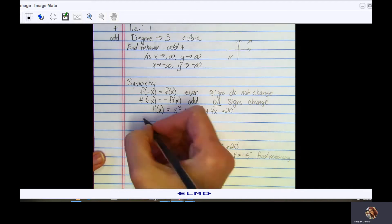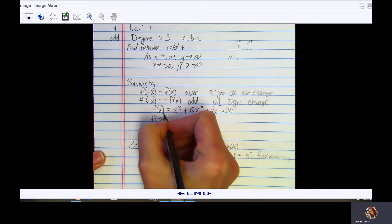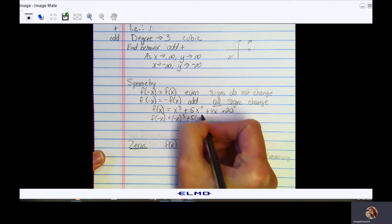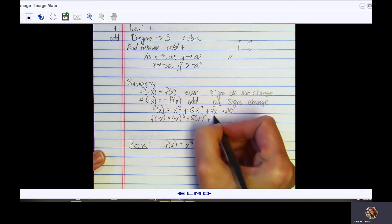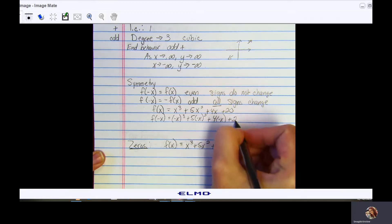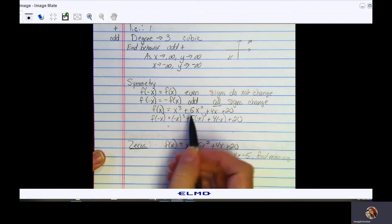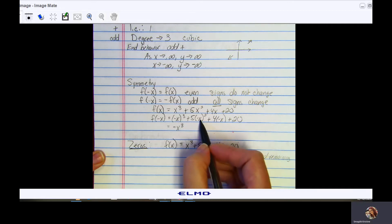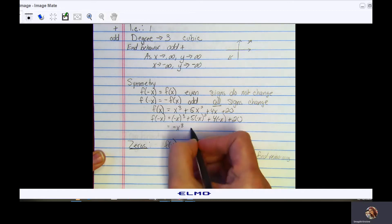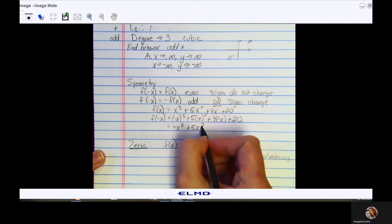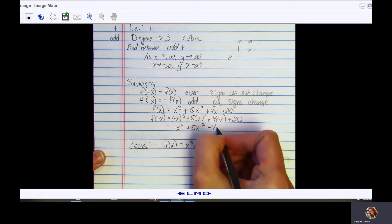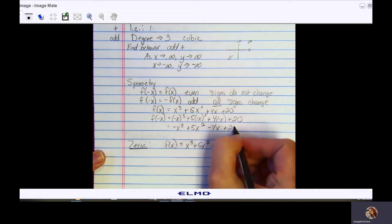So what I'm going to do is I'm going to input negative x for all of my x's and then we'll just simplify. If I raise a negative number to an odd power, it's going to stay negative. Here, any negative number raised to an even power would turn positive, so therefore we get 5x squared. Here, 4 times negative x, so now my sign is changing. And this plus 20, nothing happens to it.